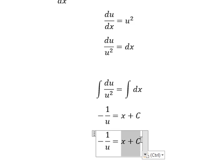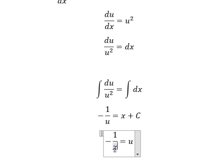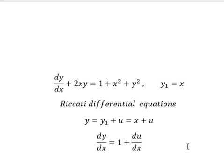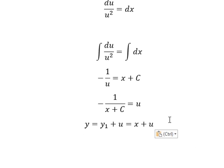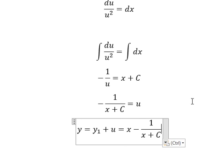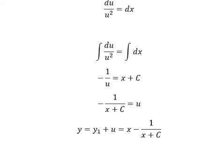This one we have negative 1, so I will rearrange and u goes to the right. So we go back in here and change u into this one. And here is the final answer: y equals y₁ plus u equals x minus 1 over (x plus C).